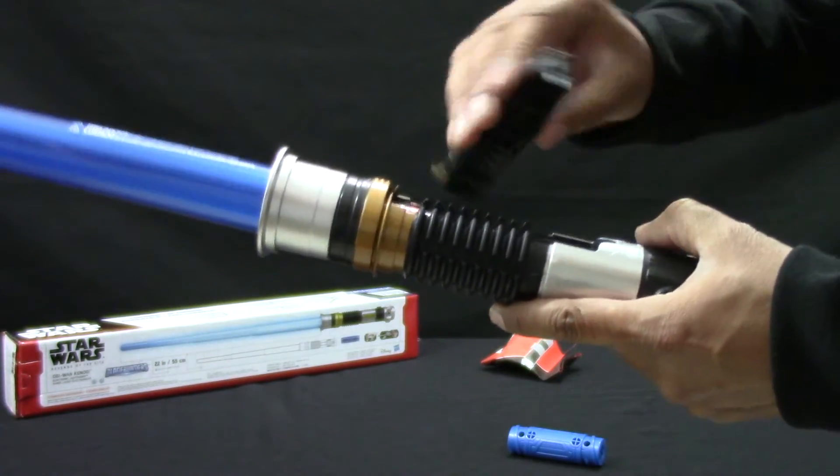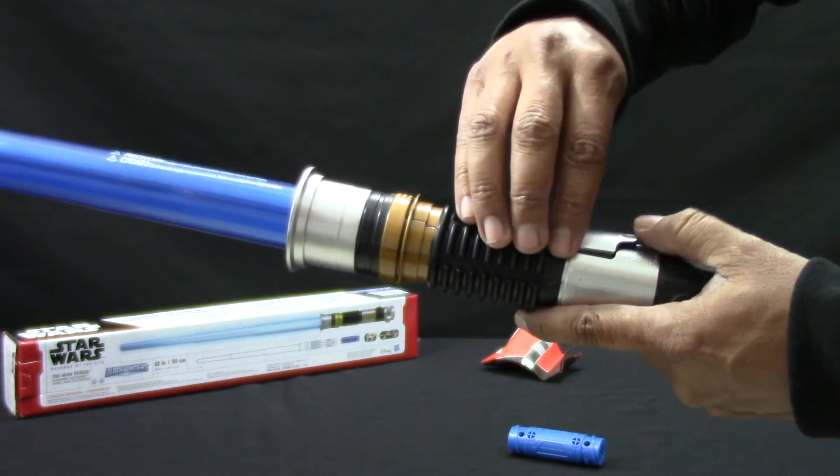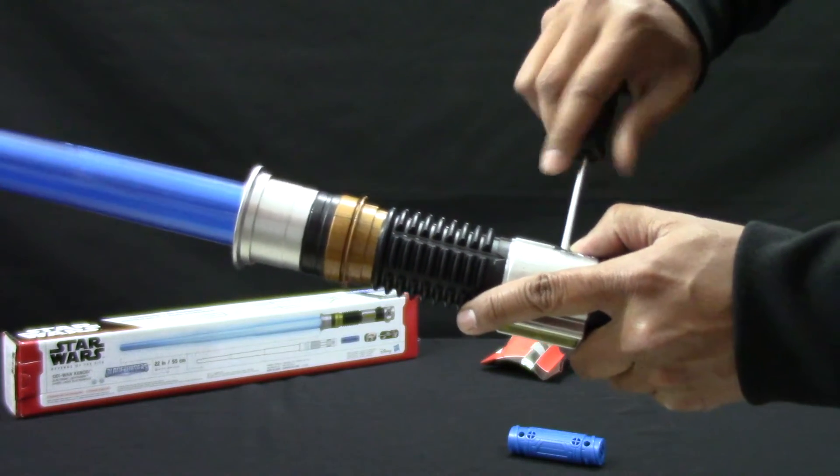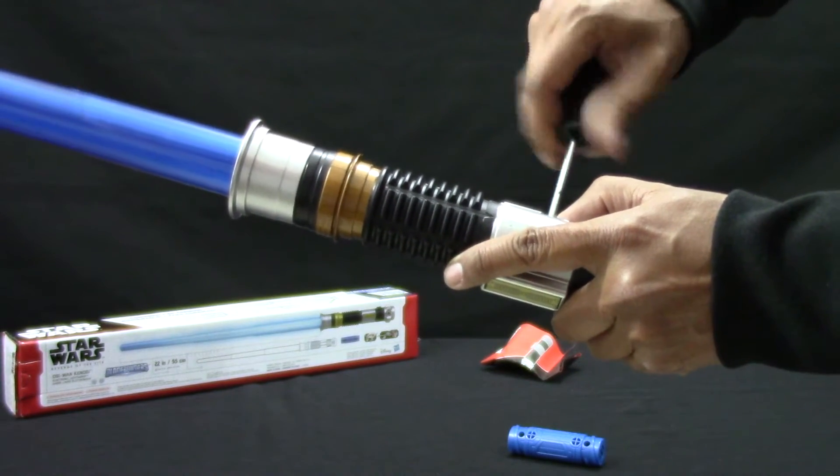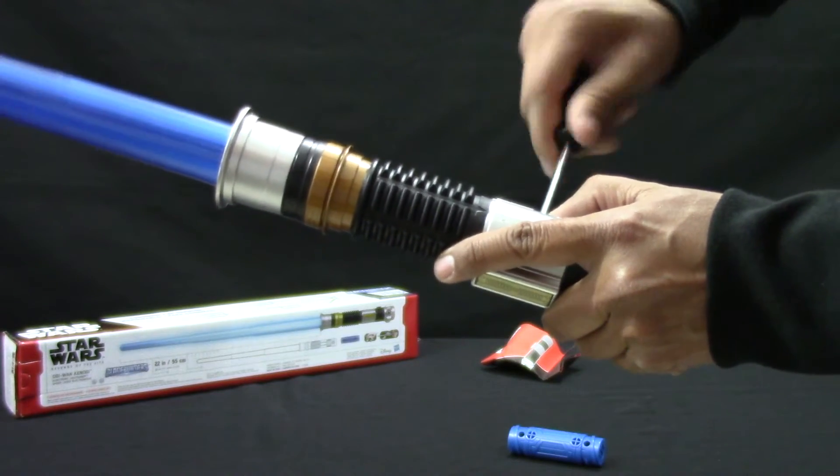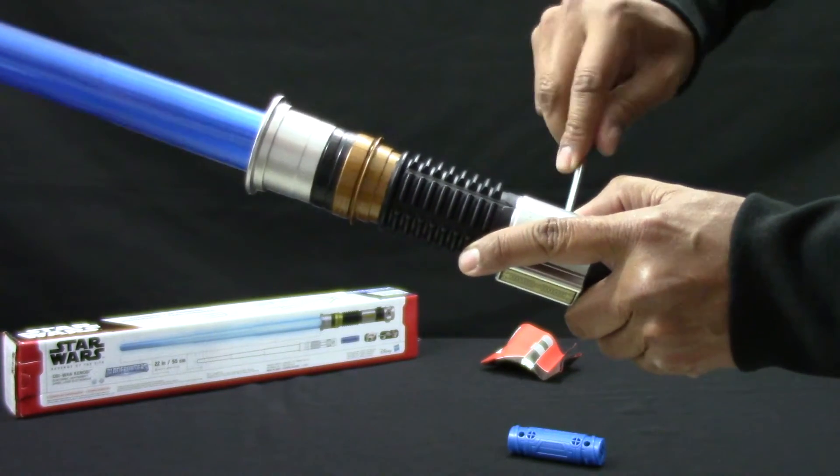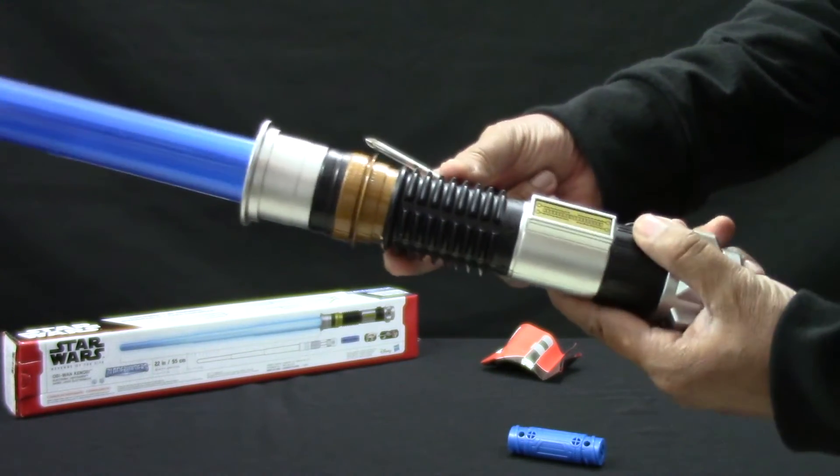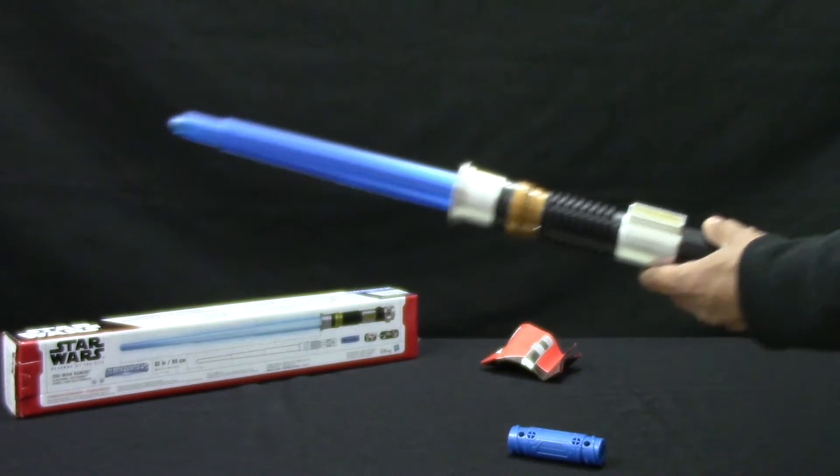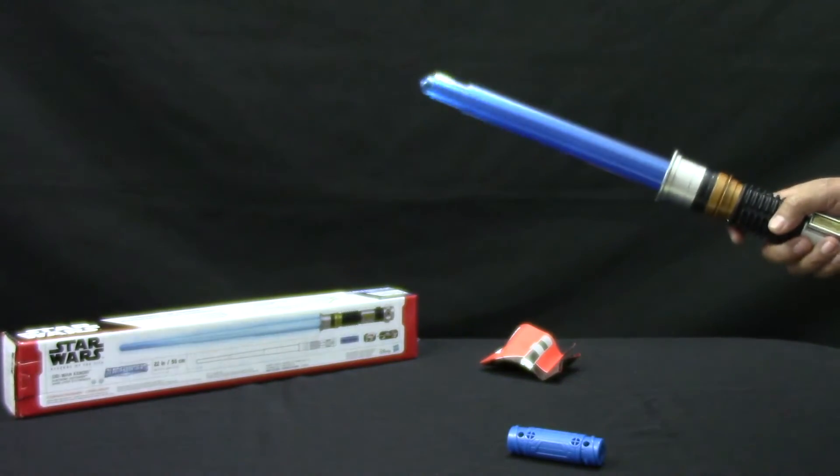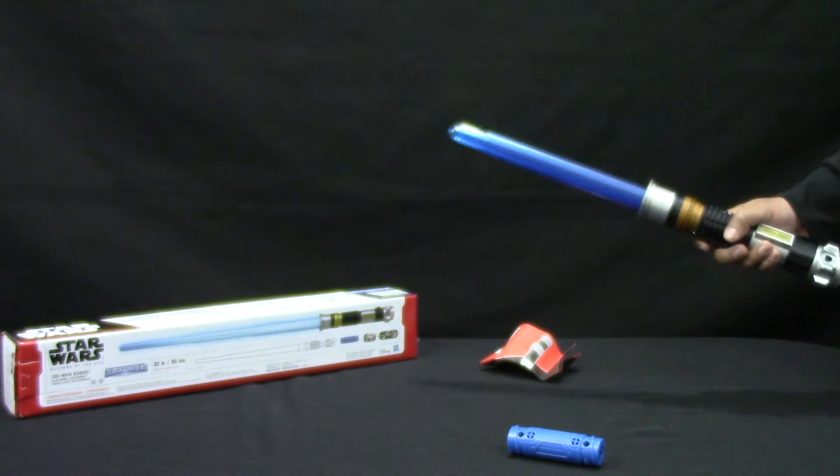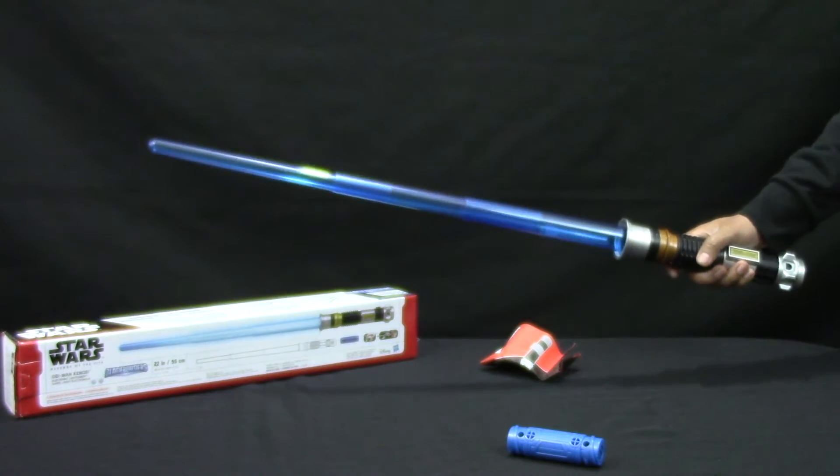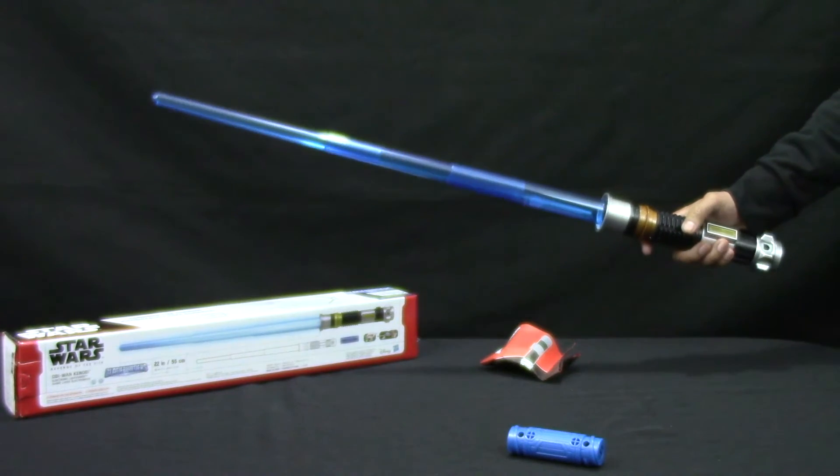Now we are sure that the lightsaber is working correctly. Let's place again this cover and screw again. And now our lightsaber is ready. Let's try. This is a telescopic lightsaber so to extend we only have to shake it. Now it's ready to turn it on.